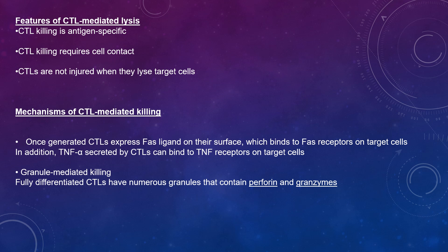The second mechanism is granule-mediated killing. Fully differentiated CTLs contain numerous granules that contain perforin and granzymes. Upon contact with target cells, perforin is released and polymerises to form channels in the target cell membrane. Granzymes, which are serine proteases, enter the target cell through these channels and activate caspases and nucleases in the target cell, resulting in apoptosis.